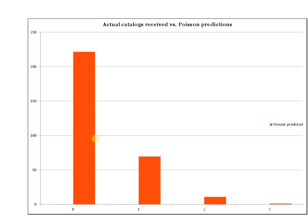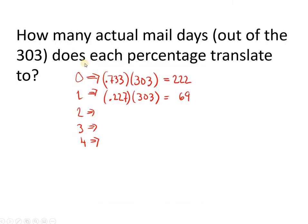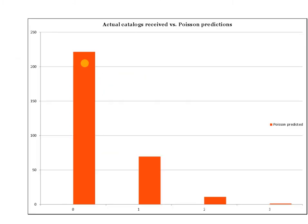These were the predictions from the Poisson. There's my bar representing 0, which was going to be 222 days, and my bar representing 1, which was going to be about 69 days. Then 2 was down here — more like 8 or 9 days. 3 was only 1 day, and 4 worked out to be 0. These are the predictions.